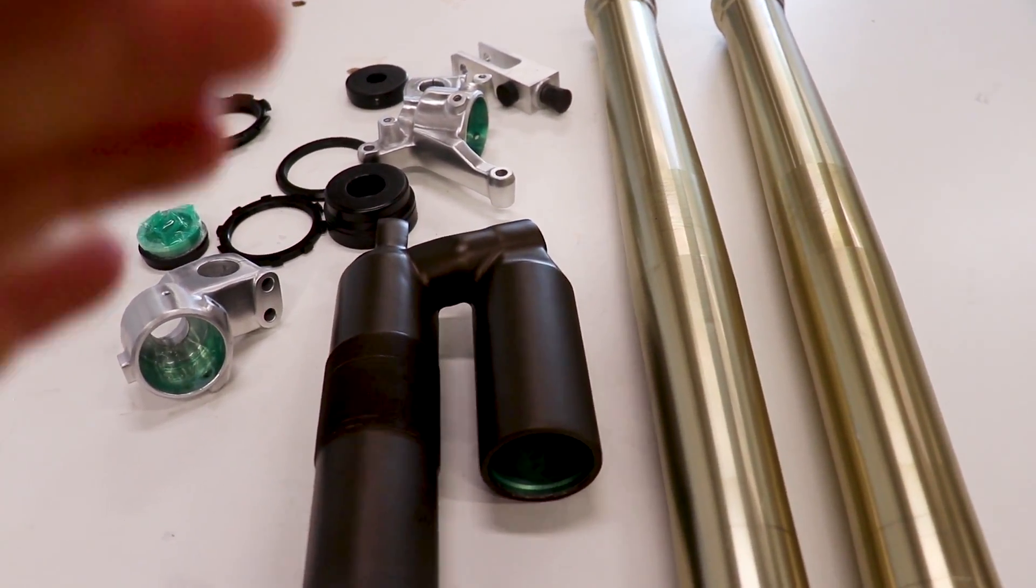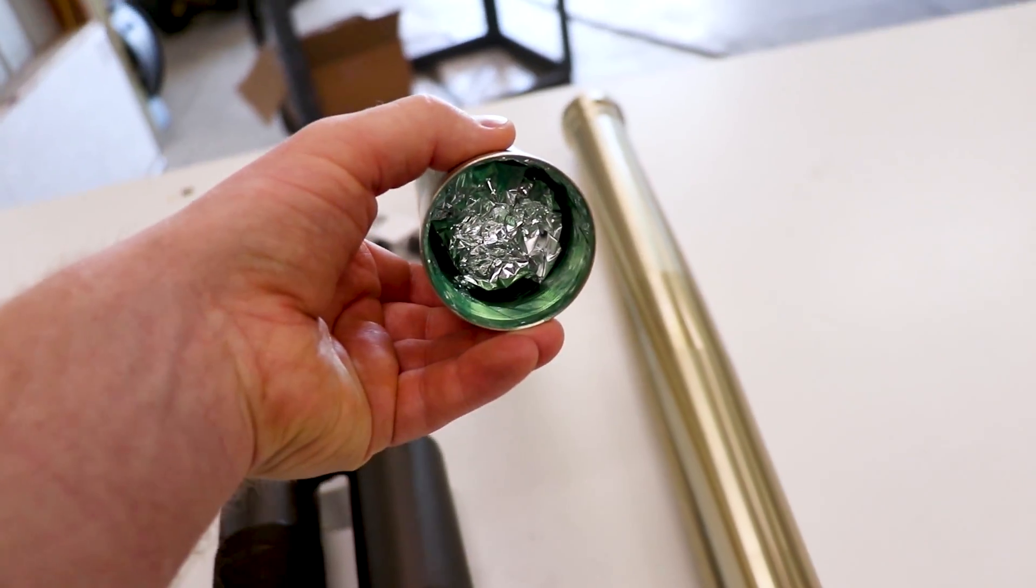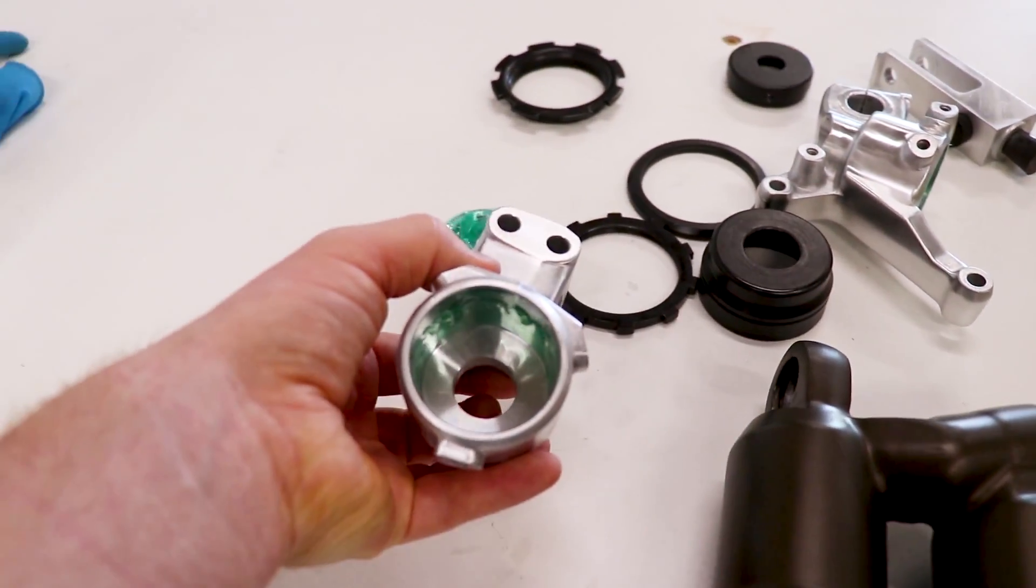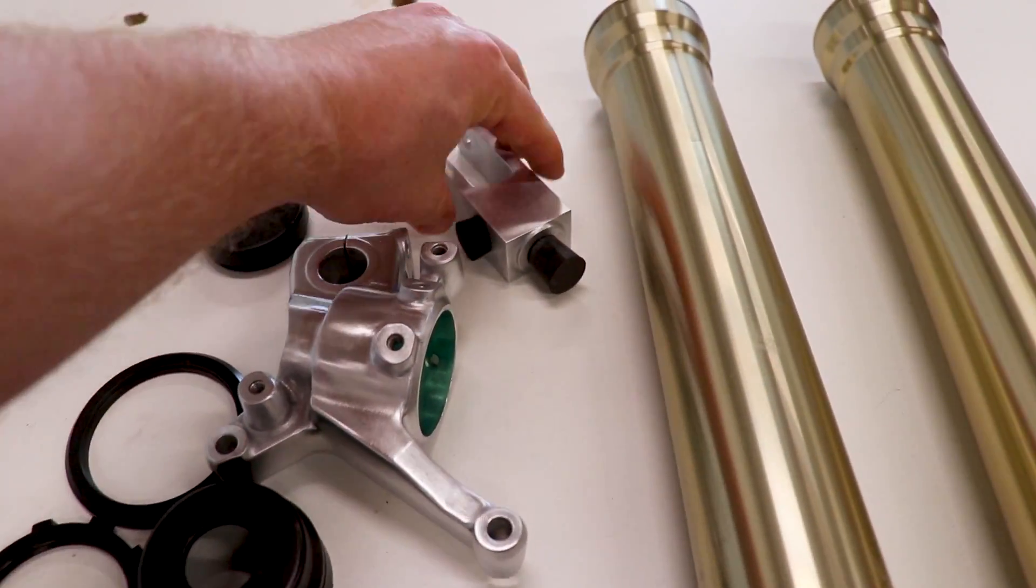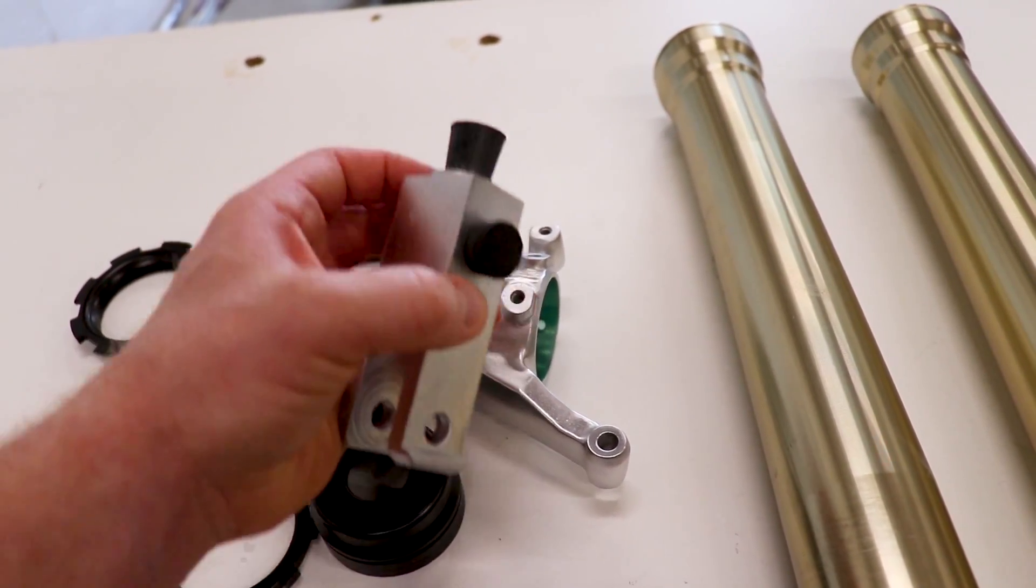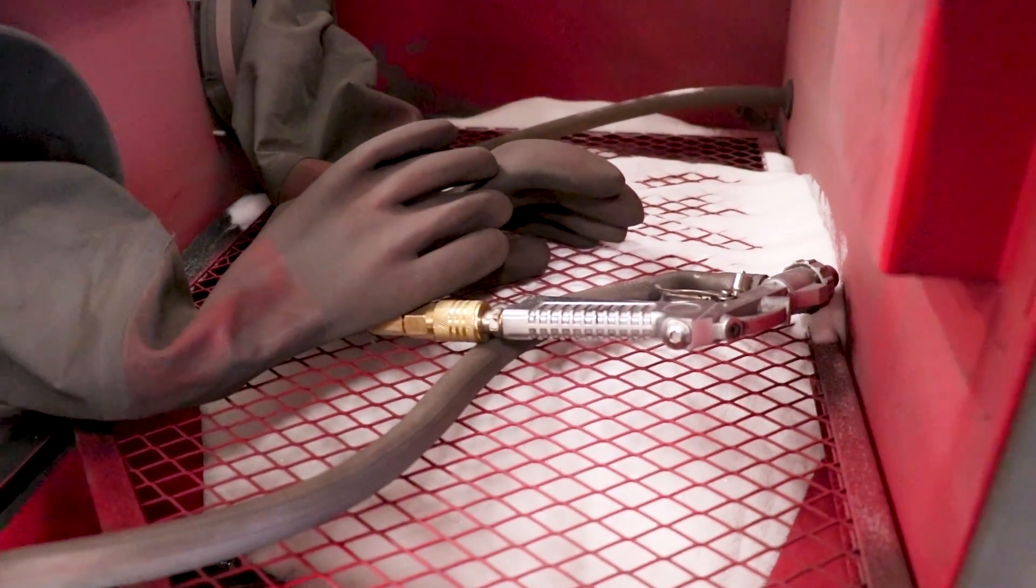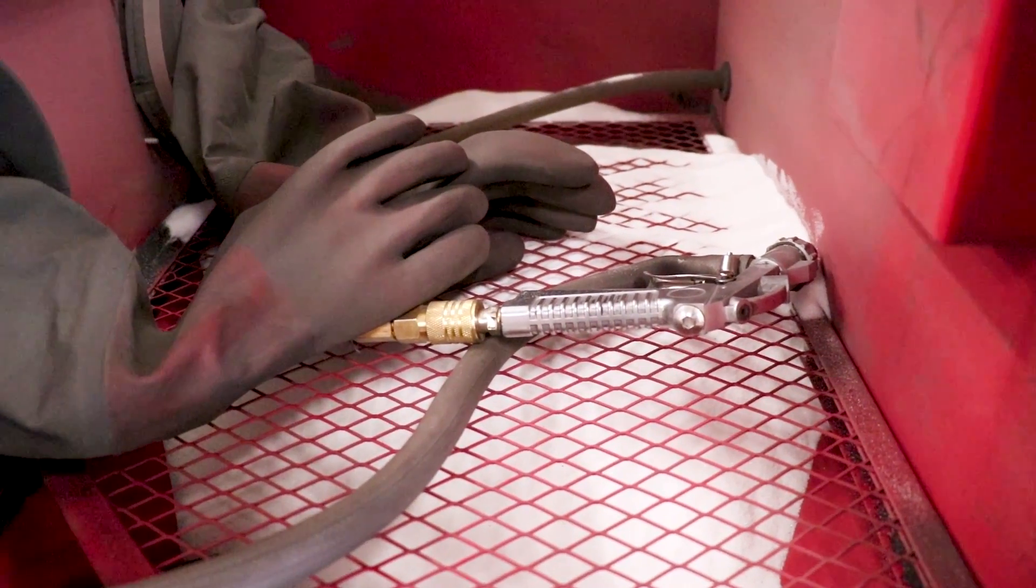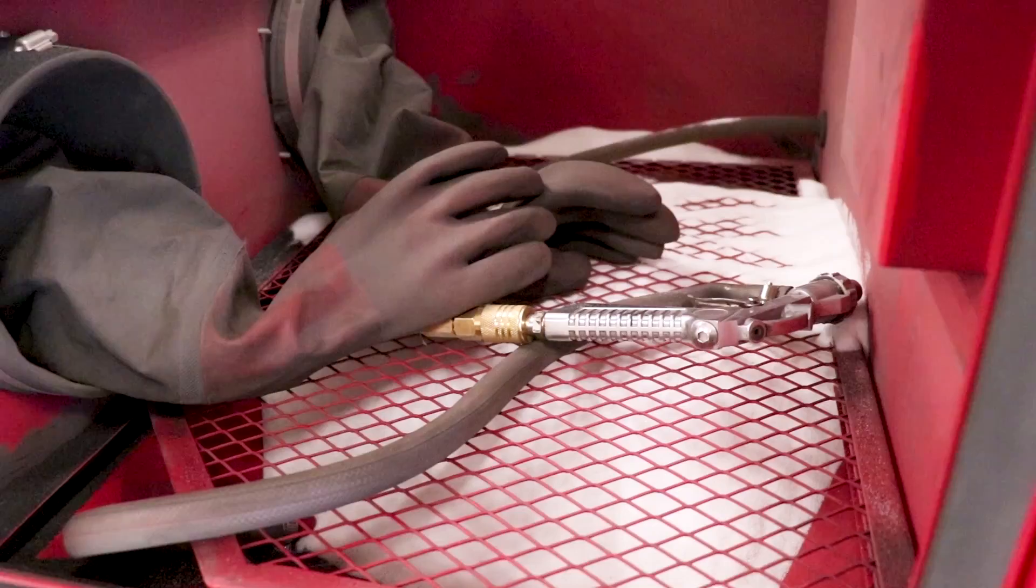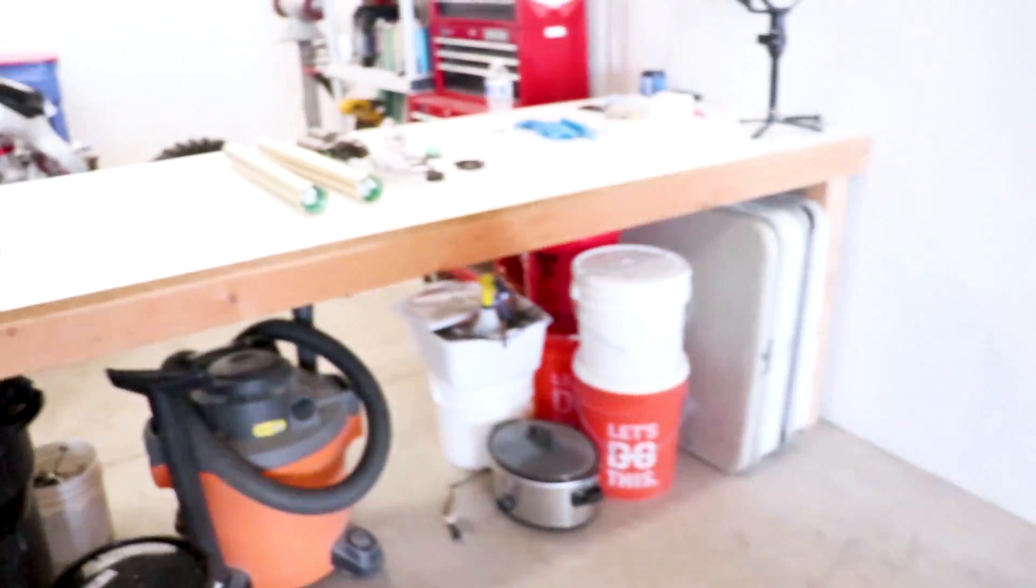Got everything ready to blast now, so the inside of the shock body is masked off, same with the fork tubes. Stuck the little tin foil in there just to keep the sand from tearing up the insides. Fork lugs are ready to go, and for the clevis just plugged it with these silicone plugs. So let's get to blasting. Now the media that I'm using in this cabinet is an 80 grit glass bead, not quite as aggressive as the aluminum oxide I was using previously, but still will strip paint and leaves behind a good finish for the Cerakote to stick to. And it's a lot safer to use on these aluminum parts too.